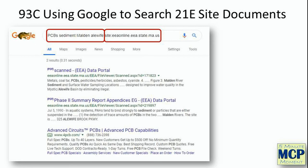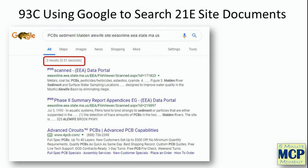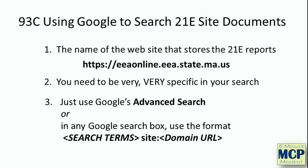This is exactly how I did the search for PCBs in sediment in the Malden River that might affect alewife, looking at the EEAonline.eea.state.ma.us server. Looking at the results and the Google search line, you can see the search criteria entered and how the search has been narrowed to that site. We narrowed thousands of documents down to just two. Remember, EEAonline.eea.state.ma.us is the location that stores the 21e site reports. You should be very, very specific in your search to narrow down these results.